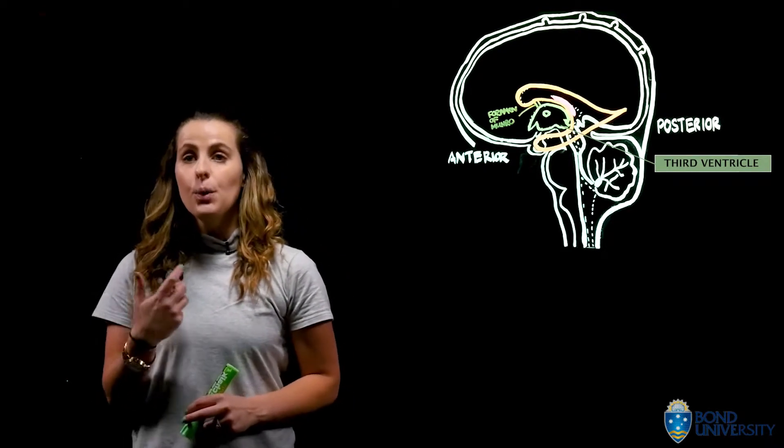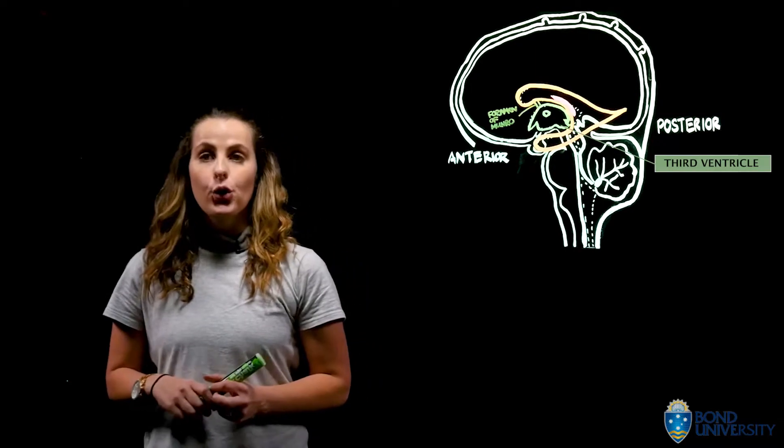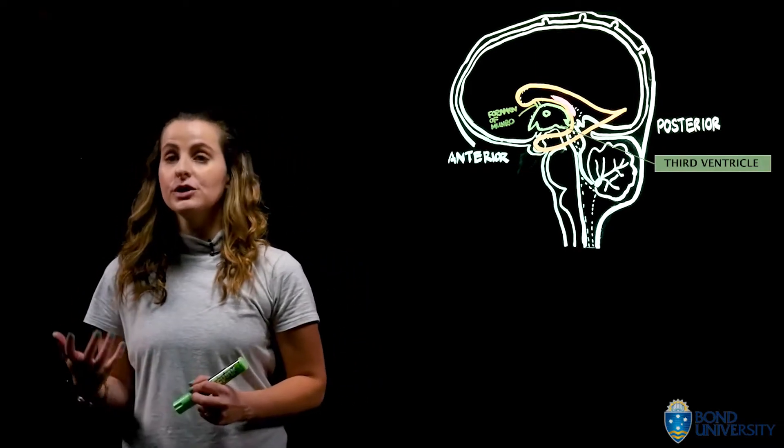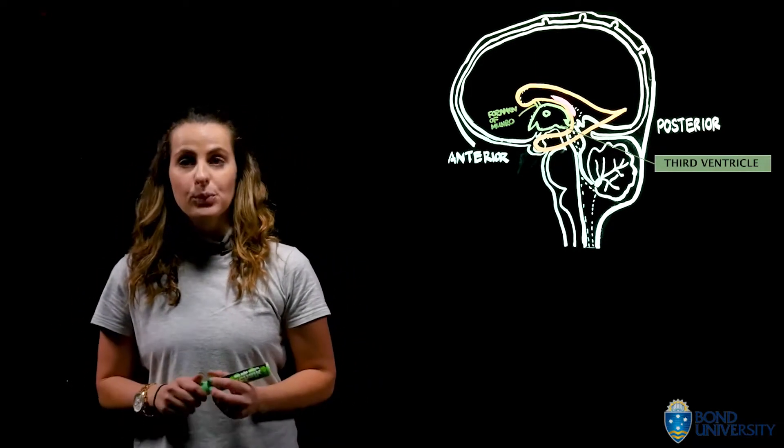From here, CSF is then going to pass posterior and inferior, coursing along with the brain stem, through a structure known as the cerebral aqueduct.